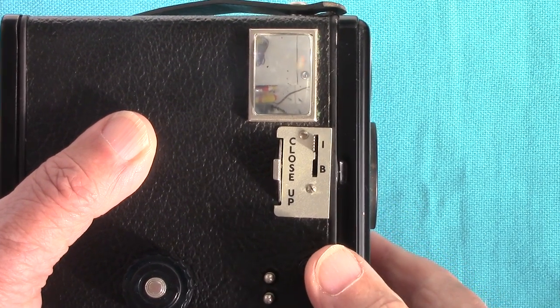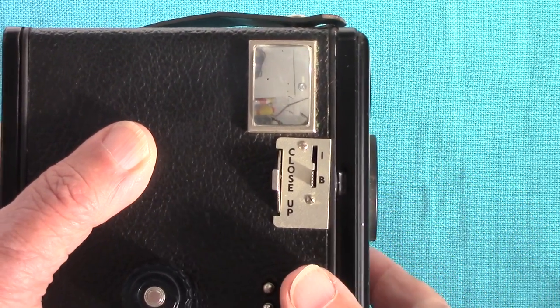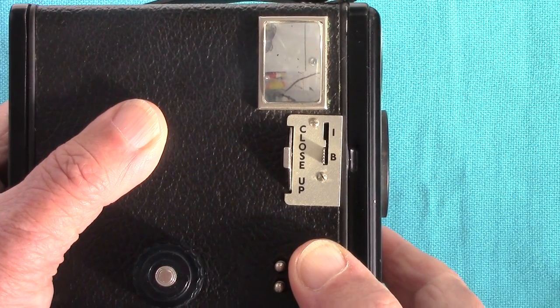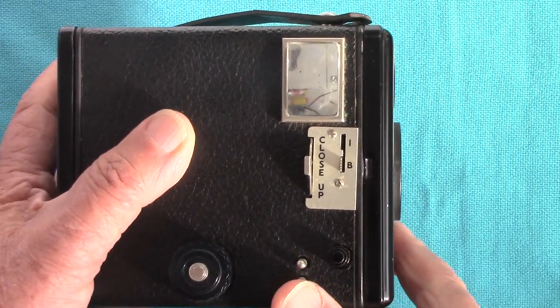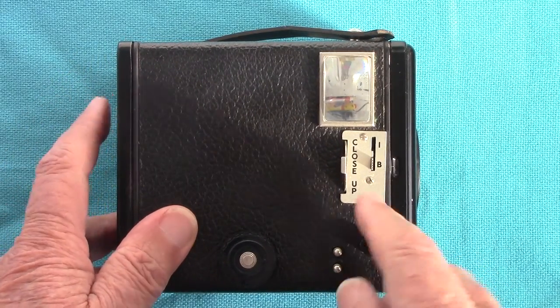If you want time exposure, you pull this little lever here to B, hold it down for one second, two seconds, three seconds, then let it up again. That is the time exposure device.